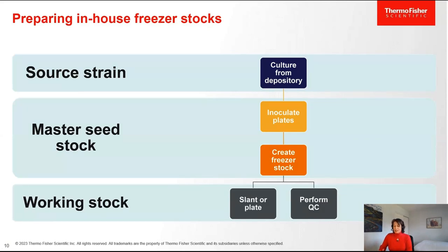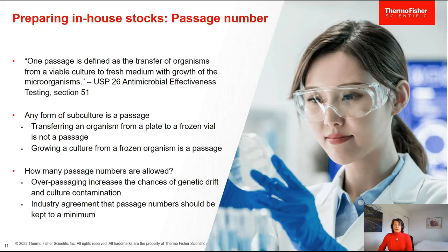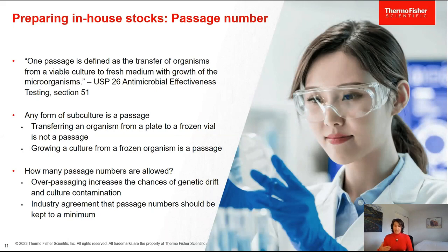The master seed stock is then suspended in broth and aliquoted into several vials for freezing. After a minimum of 48 hours of freezing, a vial is tested to check the purity of the sample via identification methods such as biochemical analyses. You would then grow a working culture from the freezer stock onto a plate or a slant. I am frequently asked about culture passage numbers. Simply put, they are every time a live culture is subcultured — that's a passage. When you freeze a culture or preserve it in a gel or in a disk, that is not a passage because the preserved culture is not in a viable state. Once that preserved culture is rehydrated or thawed and grown onto fresh agar, that's a passage.